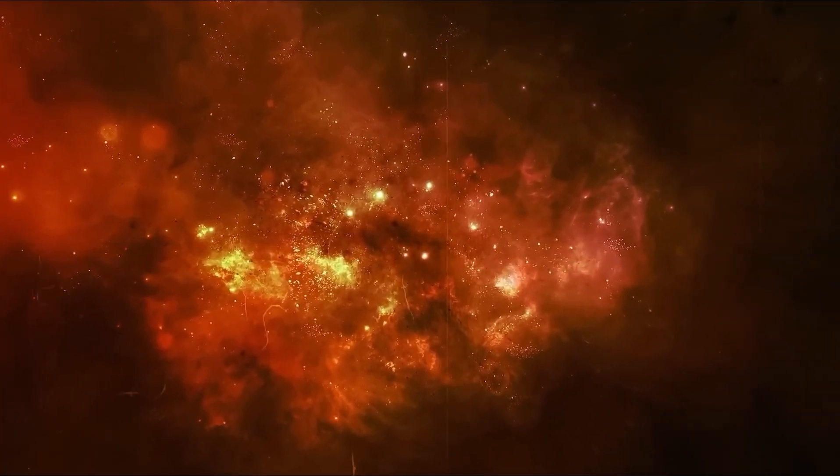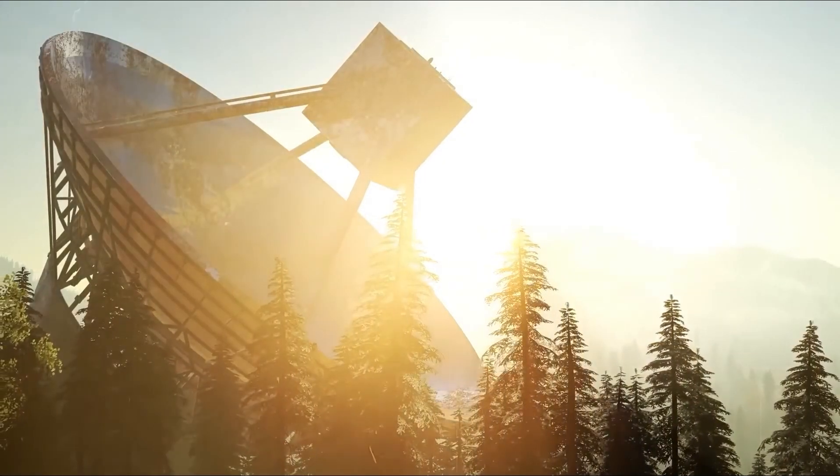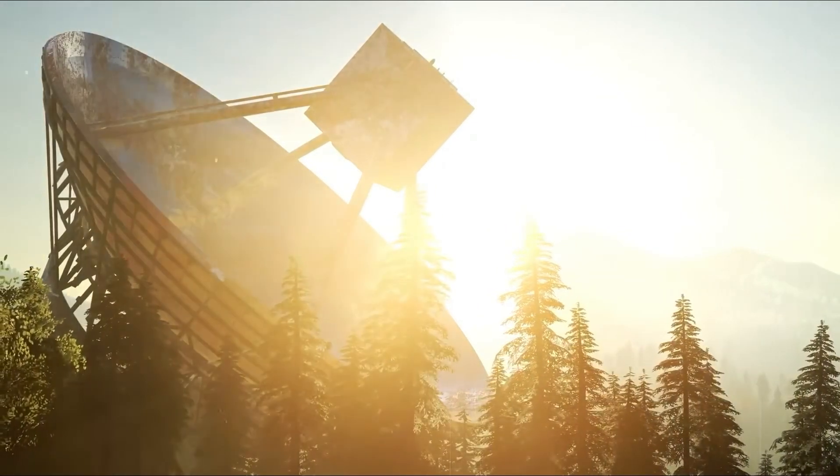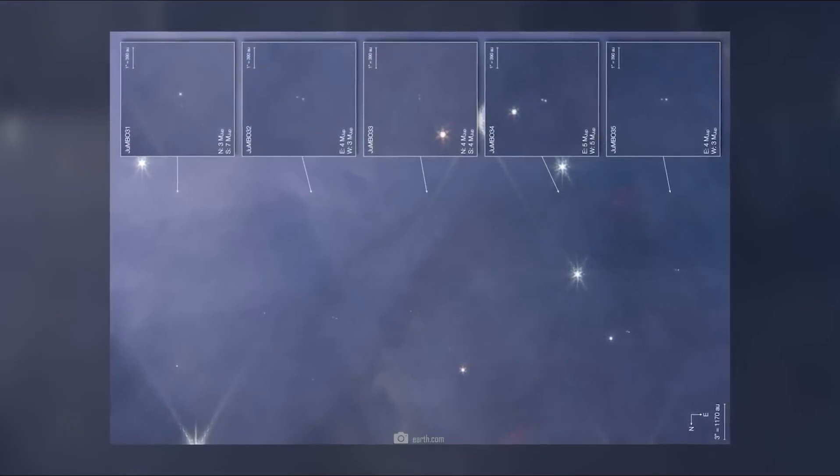It is impossible to discover why and how these objects formed. 40 Jupiter-like planets in one place are already an astronomical rarity, but here we have 40 pairs that are also completely free and not bound to a star, while traveling through space.